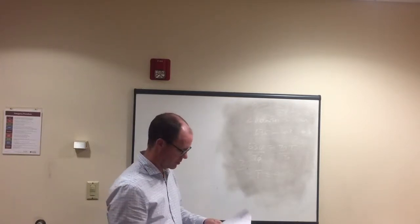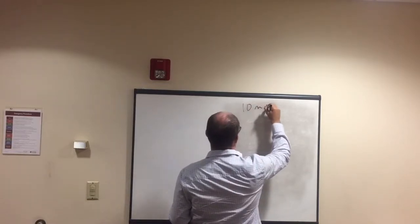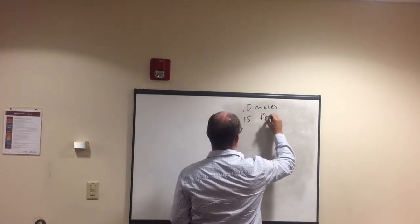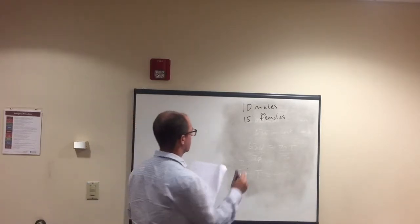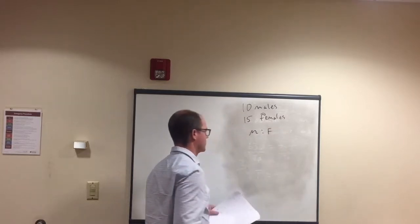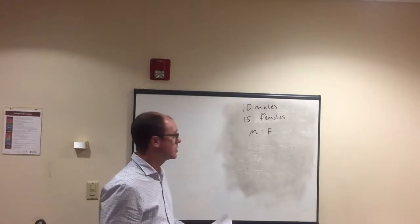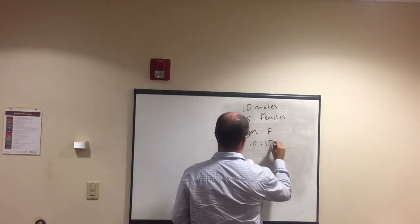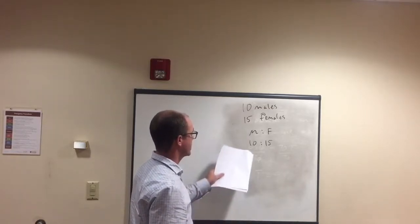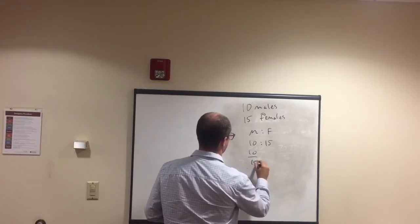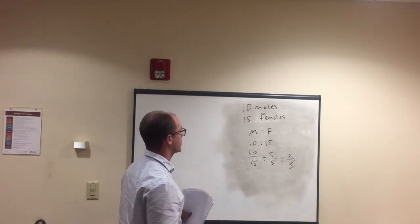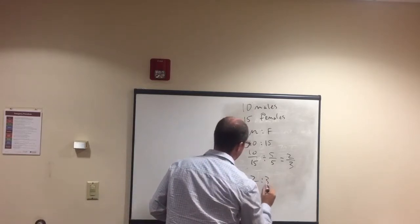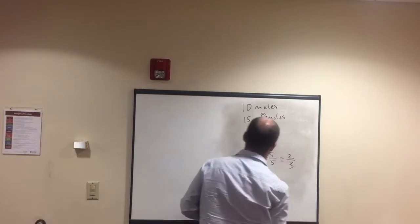Now let's look at proportions. In a classroom there are 10 males and 15 females. What is the proportion of males to females? They'll want you to reduce it. We have 10 over 15 — divide top and bottom by 5 — and we get 2 out of 3. So males to females is 2 to 3.